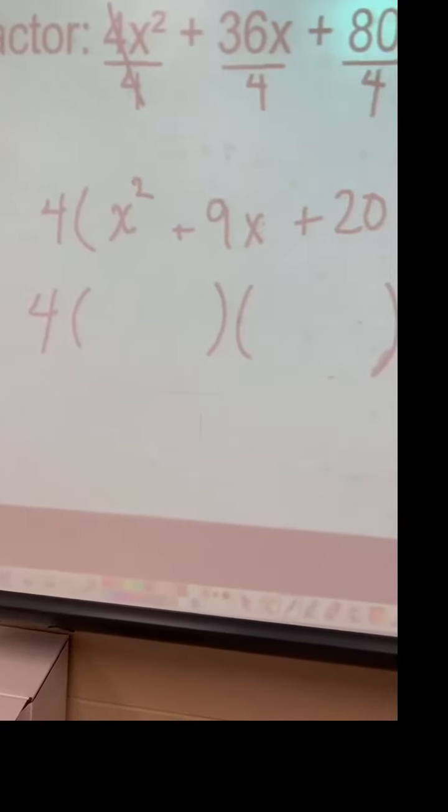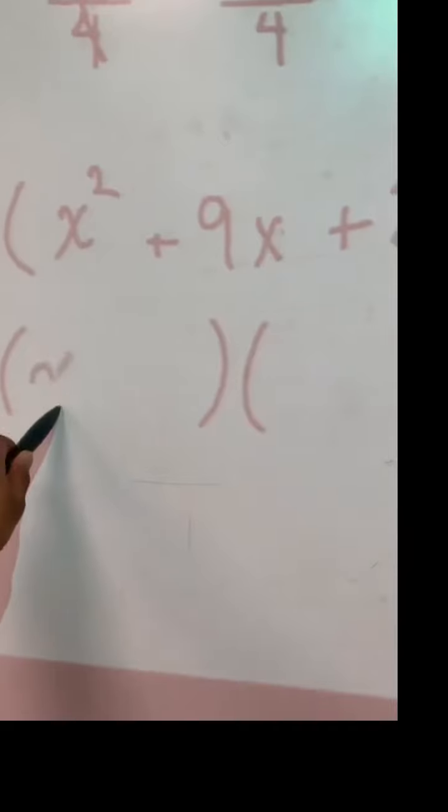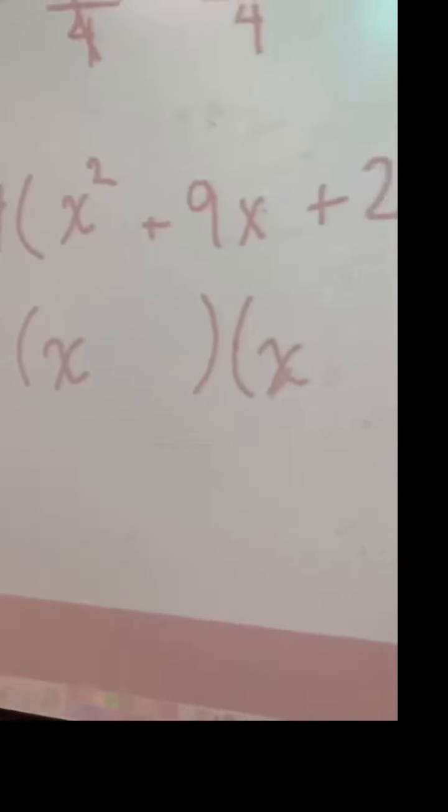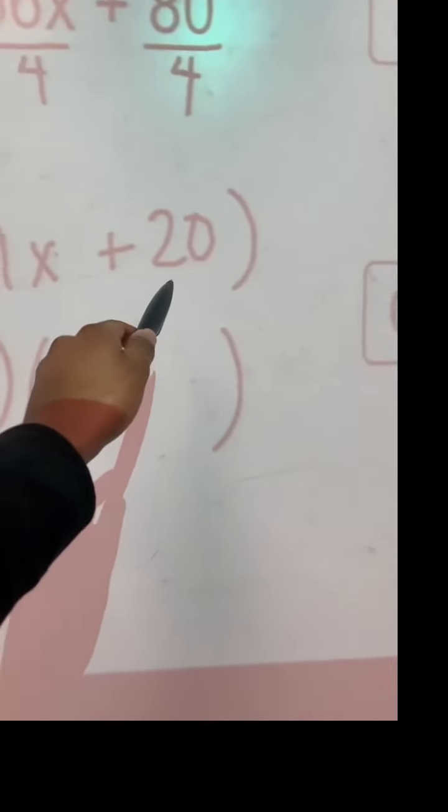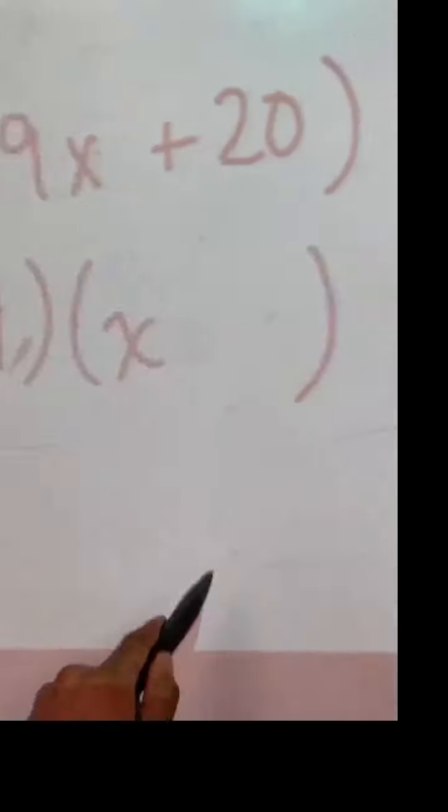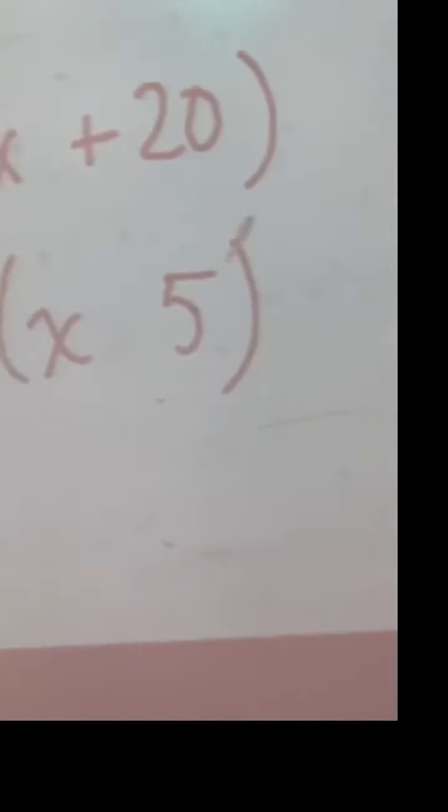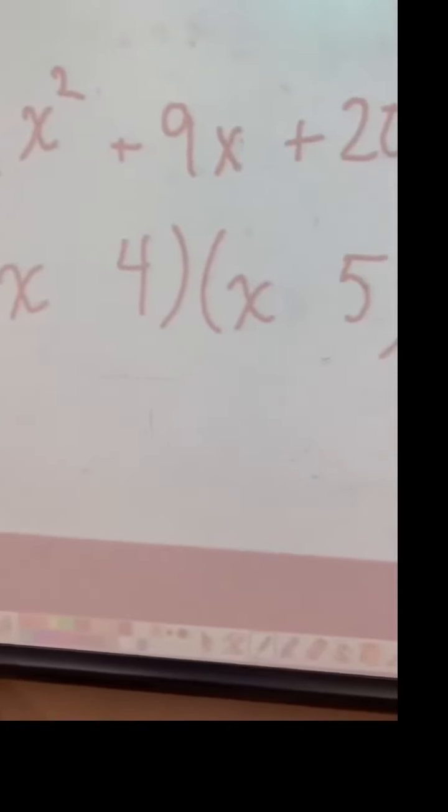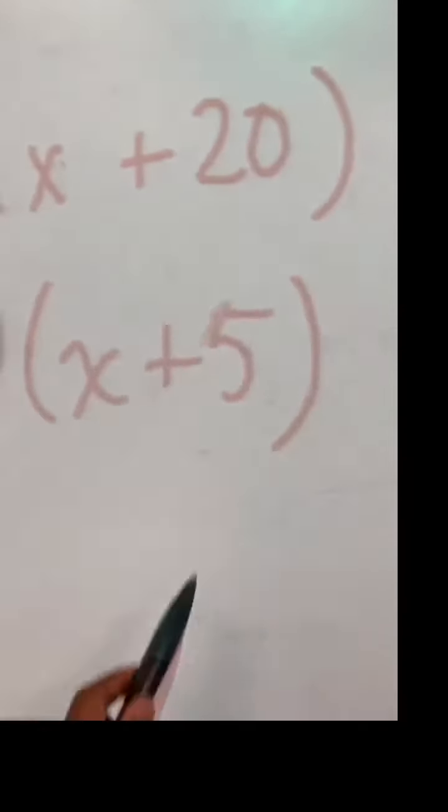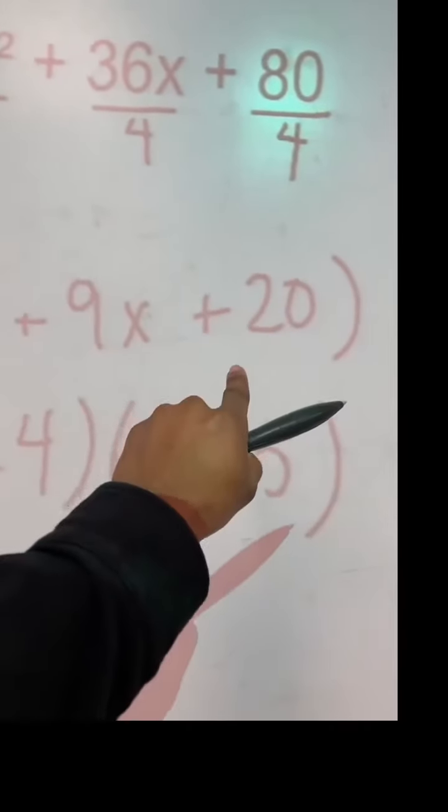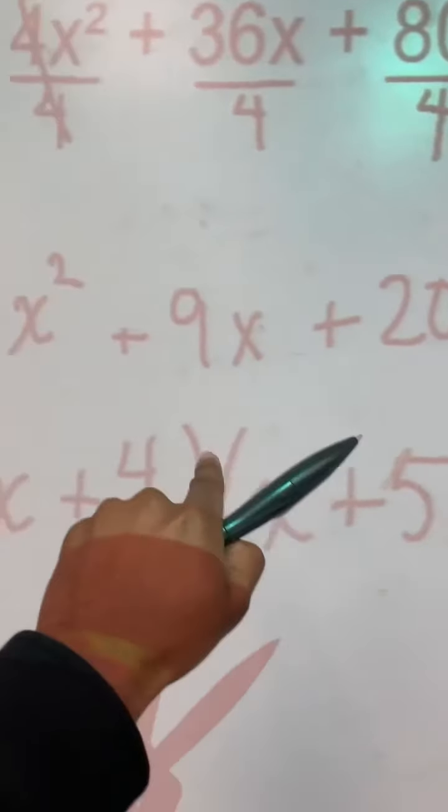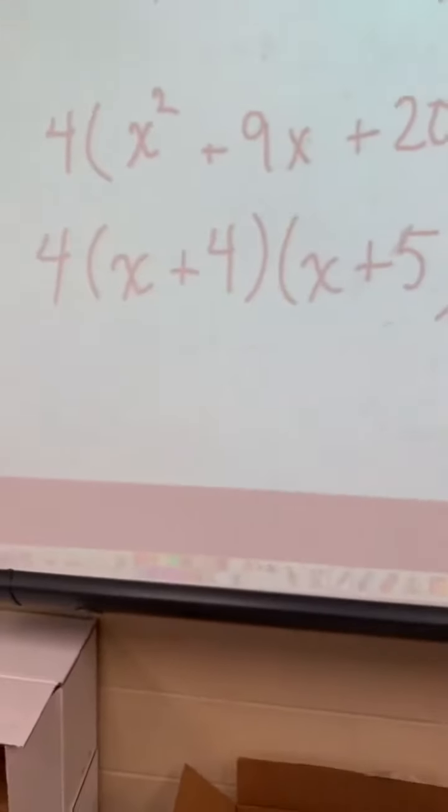All right, so the easy part, x², that's easy. x times x. Then I look at this 20 part. We already determined we're going to use a 4 and a 5. So 4, 5. And both of them will be positive. A positive 4 times a positive 5 is a positive 20. A positive 4 plus a positive 5 is a positive 9. And there are my factors.